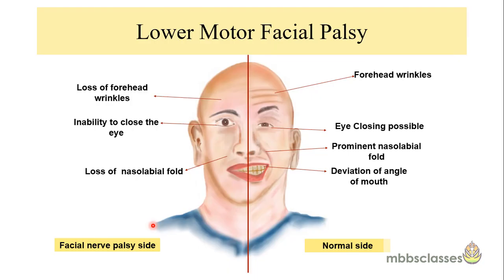The type of facial palsy in herpes zoster oticus is lower motor neuron type. When we do the motor examination and ask the patient to raise their eyebrows, there will be loss of forehead wrinkles on the involved side. When asked to close the eyes, there will be inability to close them — testing the orbicularis oculi muscle. There will also be loss of the nasolabial fold, and when asked to show their teeth, there will be deviation of the angle of the mouth to the opposite side.